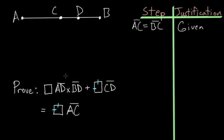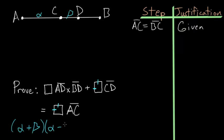If you want to consider this more algebraically, we can call AC alpha and the short side CD beta. Remember that BC equals alpha since it's the same length as AC. So what we're trying to prove is essentially that (alpha + beta) times (alpha − beta) plus beta squared equals alpha squared — the square on the half. By proving the geometric statement we're proving this algebraic identity as well.